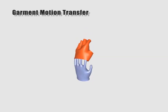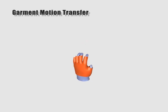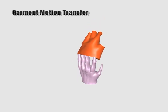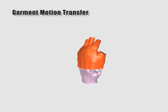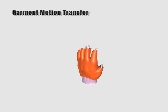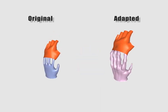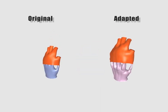Our method can also be used for deformation transfer of objects in close proximity. In this example, we transfer the garment motion from one hand model to another which has a very different geometry. The garment adopts new proportions relative to those of the new object.